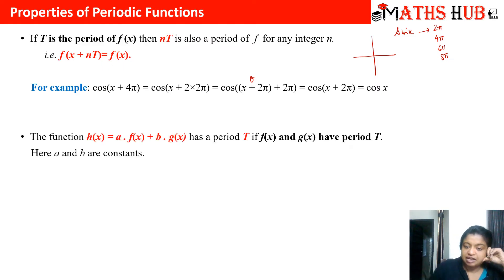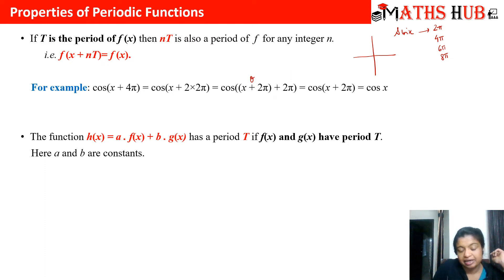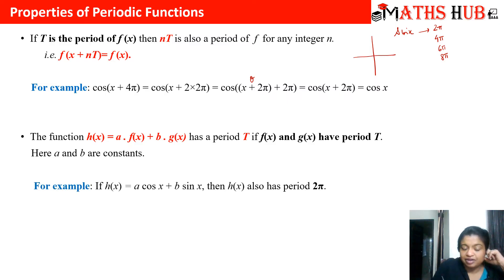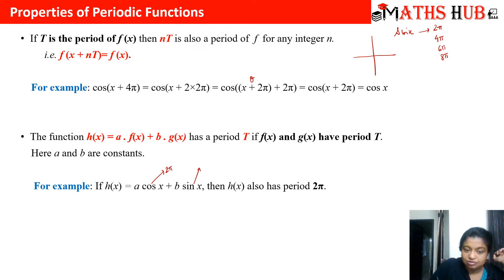Property 2: if h(x) = a·f(x) + b·g(x), where both f(x) and g(x) have period t, then h(x) will also have the same period t. That means a linear combination of two functions having the same period produces a new function with that same period. For example, h(x) = a·cos x + b·sin x — since cos x and sin x both have period 2π, the new function h(x) also has period 2π.